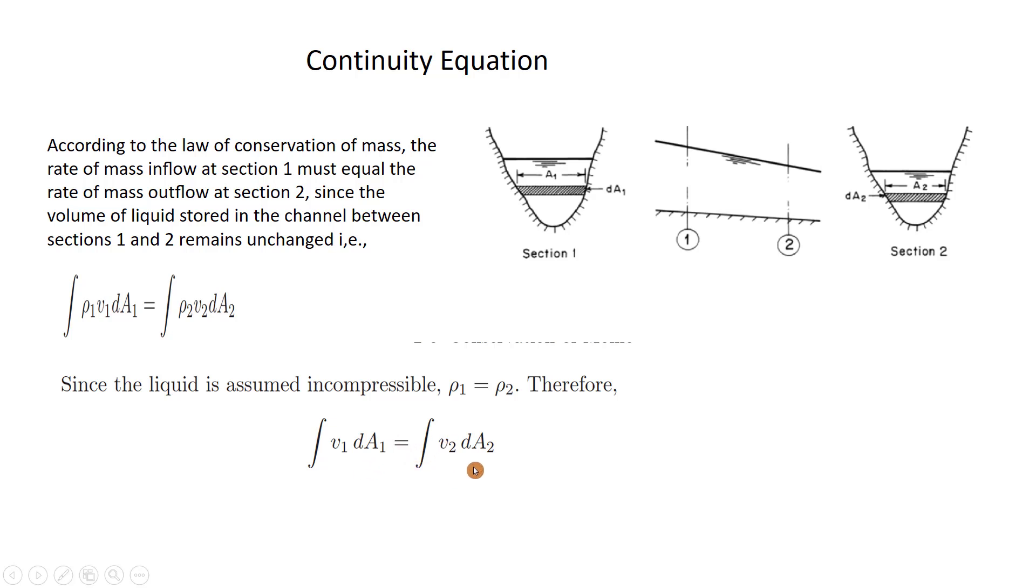So the rate of mass changes to a flow rate equation. If the velocity is assumed uniform at each section, then V1 and V2 will be constant. We can take them out from the integration symbol: V1 times the integration of dA1 equals V2 times the integration of dA2. With more simplification, the integration of dA1 becomes A1 and the integration of dA2 becomes A2, so it changes to V1·A1 = V2·A2.